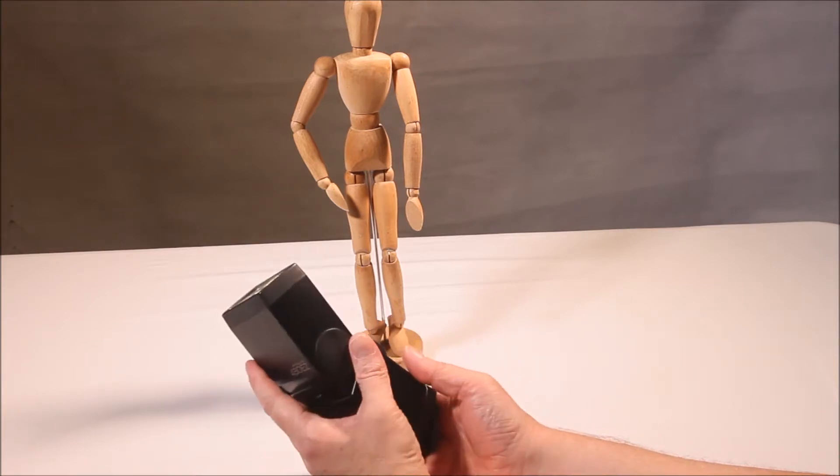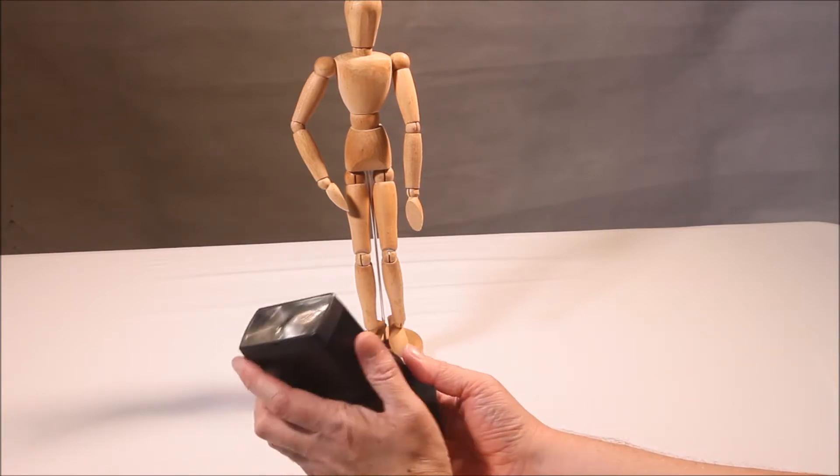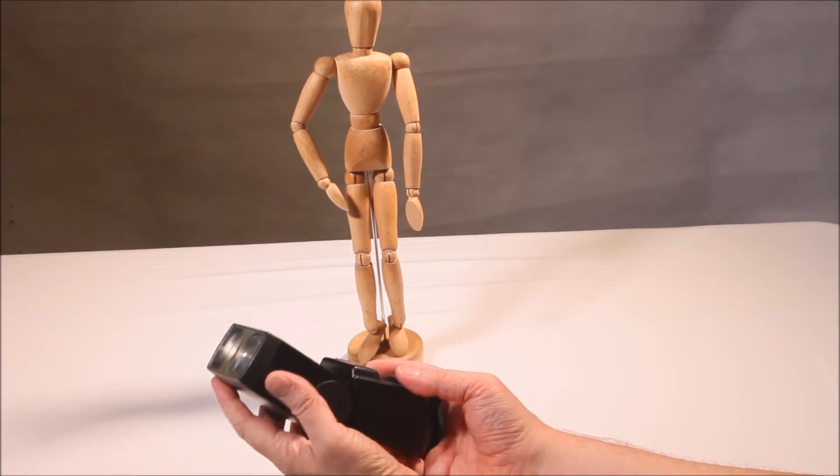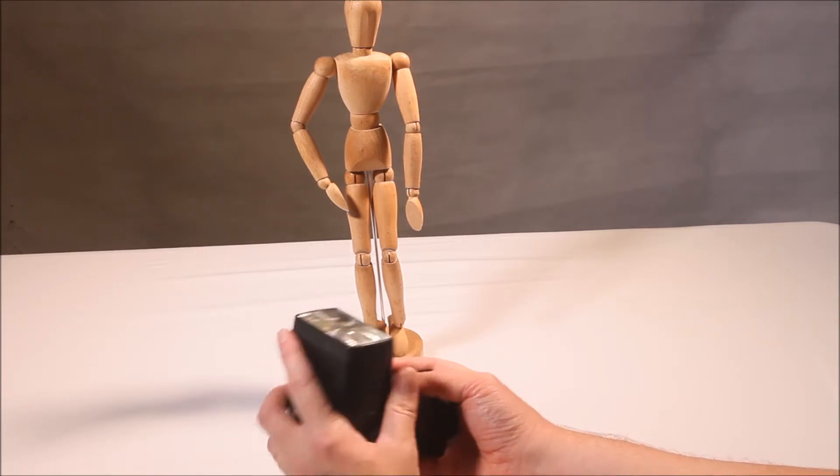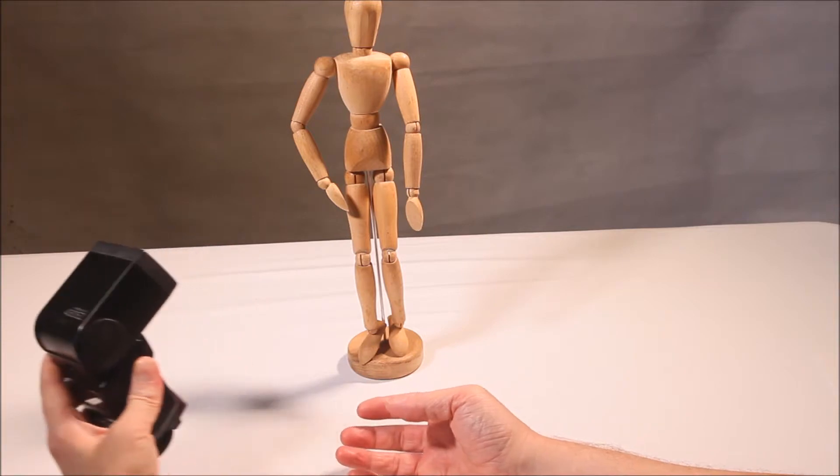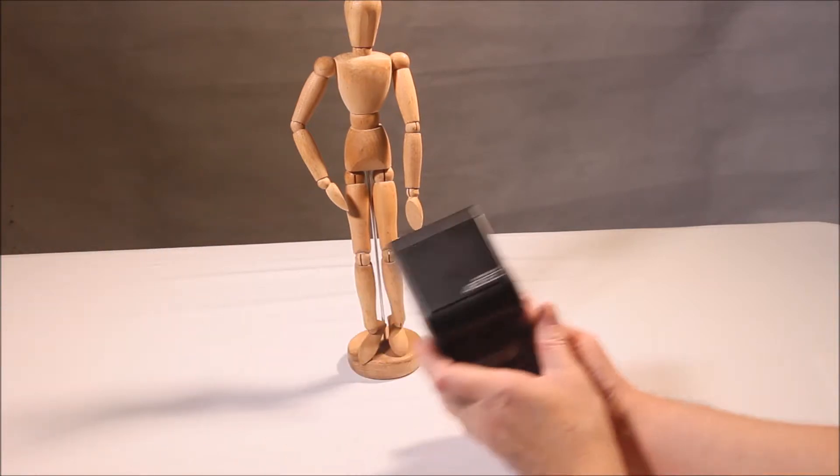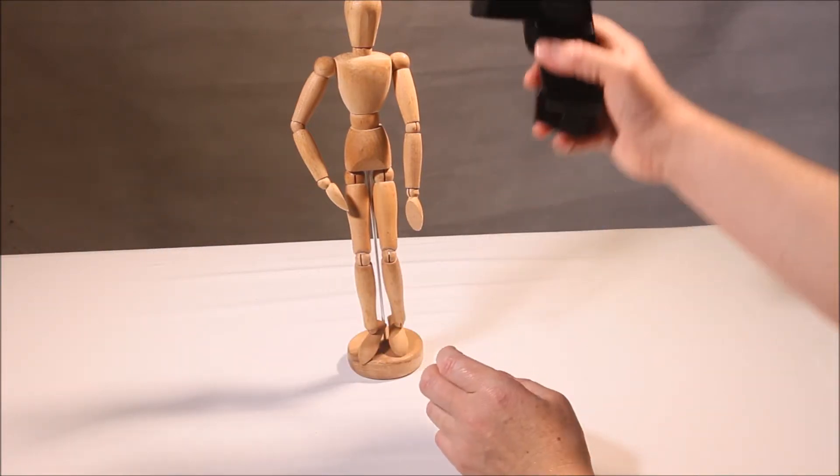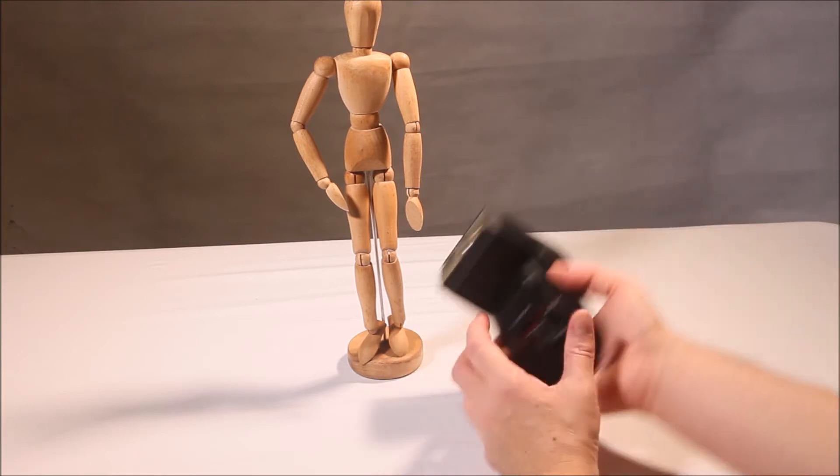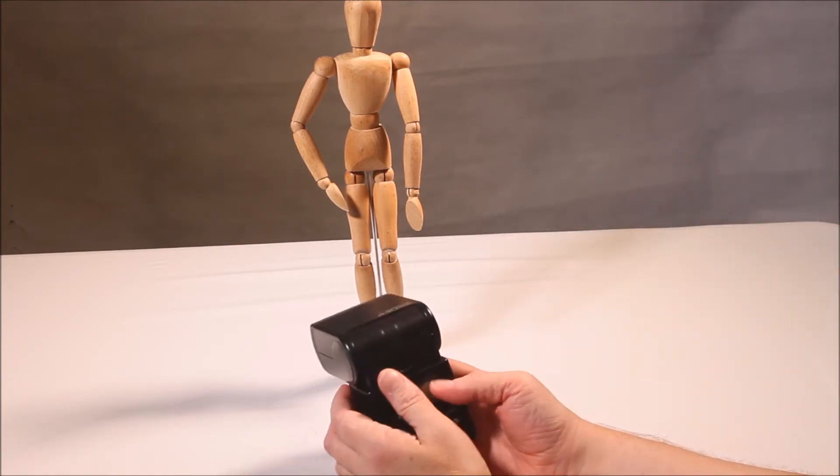This is when you need to take the flash off camera. When you take the flash off camera, you can light the subject from whatever direction you choose. So you could light Dave from here, all the way around to there, all the way around to there. You could light him from above, from the side, from below. The choice is entirely up to you.